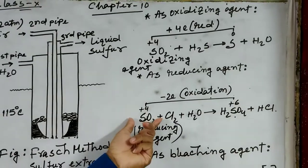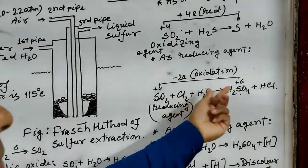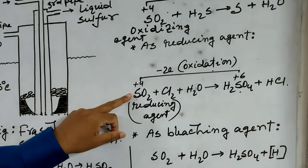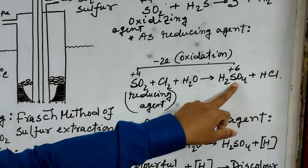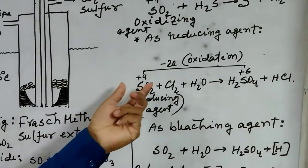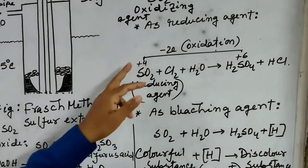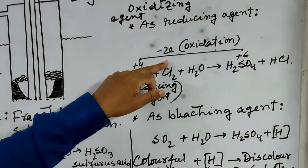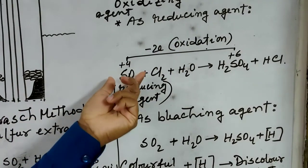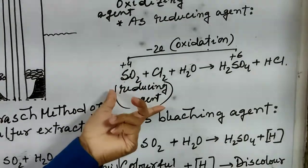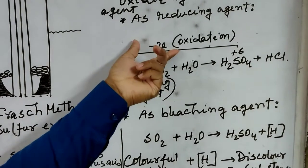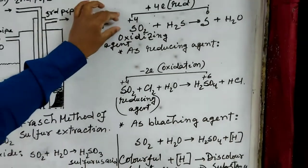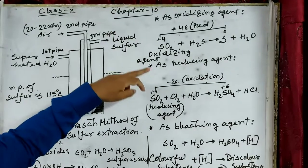When sulphur dioxide reacts with an aqueous solution of chlorine, it produces sulphuric acid and hydrochloric acid. In this reaction, the oxidation number of sulphur in sulphur dioxide is +4, and the oxidation number of sulphur in sulphuric acid is +6. The oxidation number of sulphur increases from +4 to +6 by releasing 2 electrons — this is an oxidation reaction. Sulphur dioxide releases electrons, so sulphur dioxide is a reducing agent. Therefore, sulphur dioxide acts as both an oxidizing agent and a reducing agent.